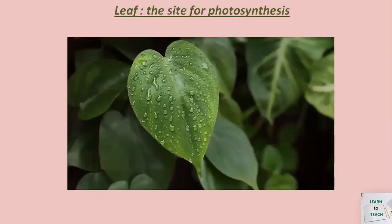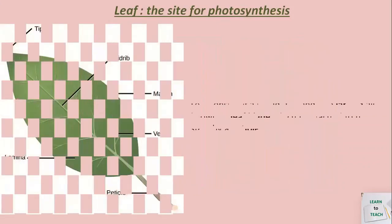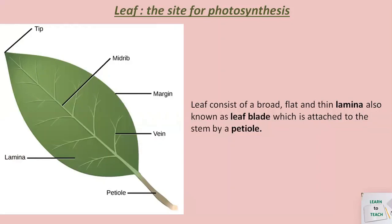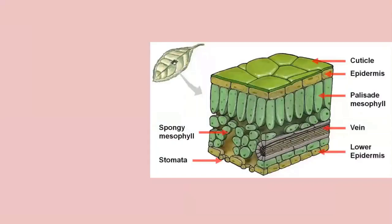When we look at the structure of a leaf it looks so simple. A leaf consists of a broad, flat and thin lamina, also called the leaf blade, which is attached to the stem by a petiole. But when we look at the cross section of the leaf we will understand its complexity.